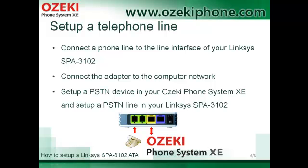To call a traditional phone from your VoIP phone, you need to set up a gateway to the Public Switched Telephone Network. In this case, you need to connect your traditional phone line to the line port of your Linksys Analog Telephone Adapter, and you need to connect the Linksys device to the computer network. Then, you need to set up a PSTN device in your Azaki Phone System AXE and set up the PSTN line in your Linksys adapter.